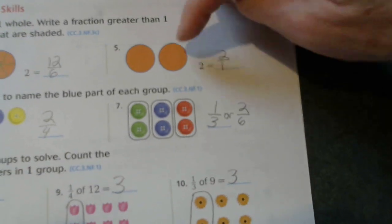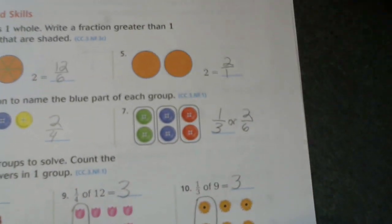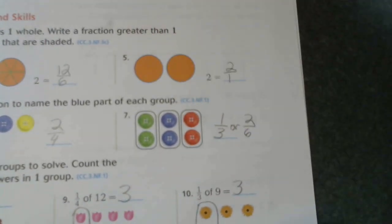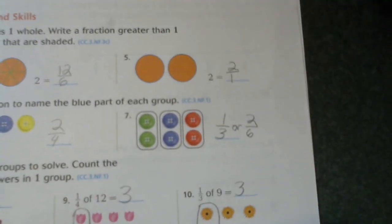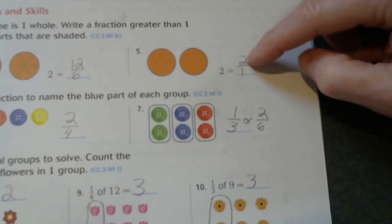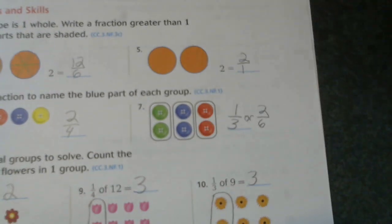Now number five, we have two wholes, and they are divided into groups of one. They are not divided. So it's two over one equals two.